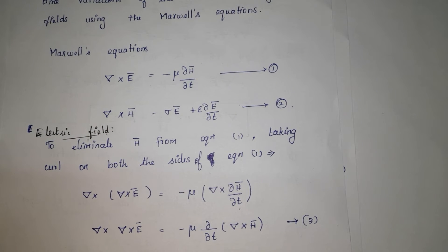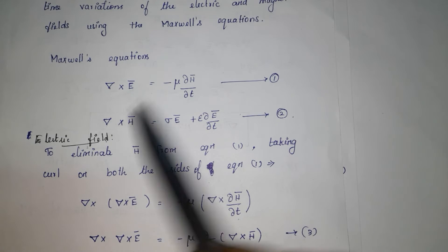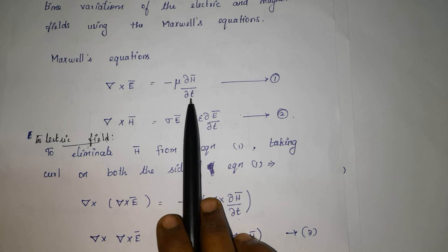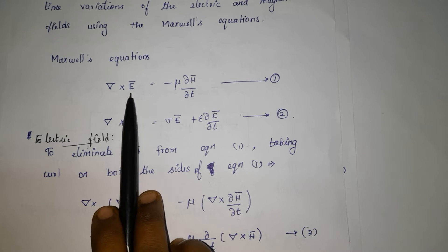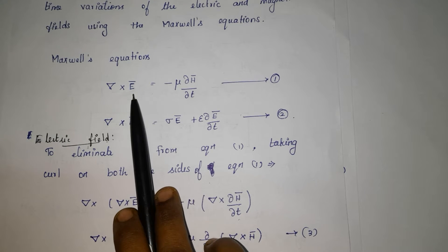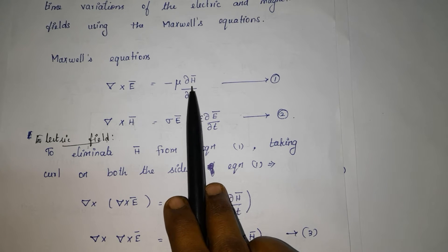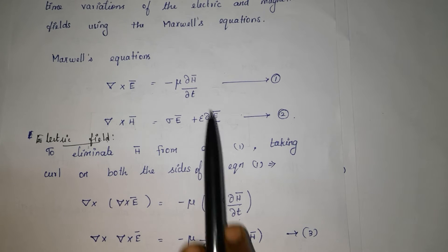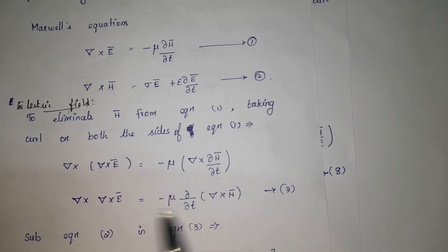To derive the electric field wave equation, I am taking equation number 1, that is derived from Faraday's law: del cross E vector is equal to minus mu times partial H vector divided by partial T. Here, E is the electric field and H is the magnetic field. To eliminate H vector from this equation, we are taking curl on both sides of equation number 1.